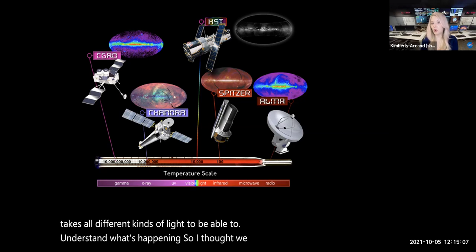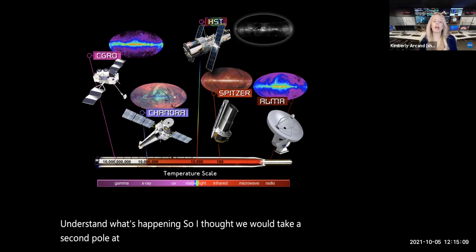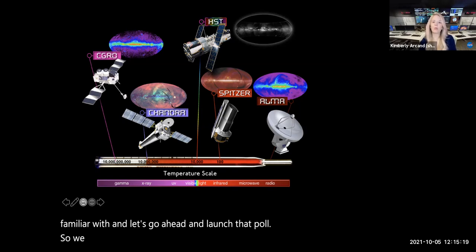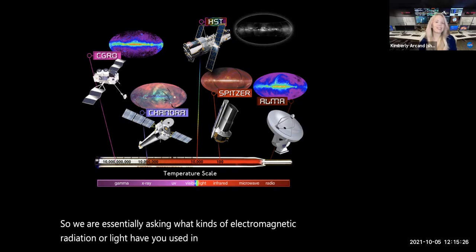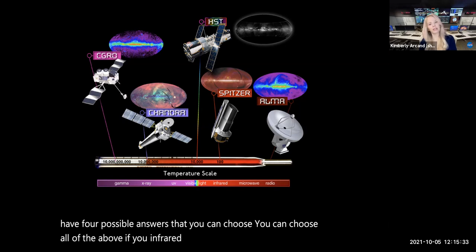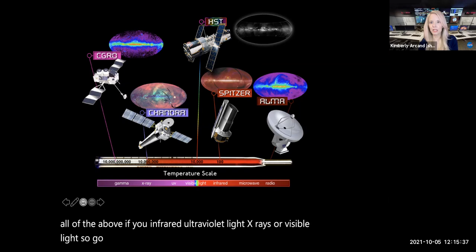So what's really useful when you're thinking about how to understand the universe is that we need all different kinds of light in order to be able to understand what's going on. So an astronomer today has like a tool belt and all of these different kinds of light are essentially different kinds of tools that they can use to answer different kinds of questions. And Chandra is one of many different kinds of telescopes that are either in orbit around Earth or perhaps on the ground or else in orbit slightly farther away than the Earth. So it takes all different kinds of light to be able to understand what's happening. So I thought we would take a second poll at this point and figure out what kinds of light you're familiar with.